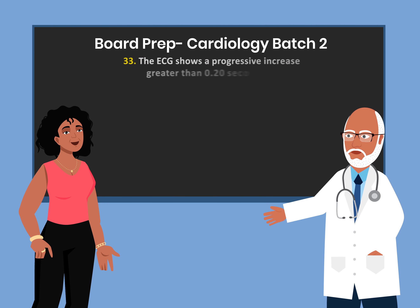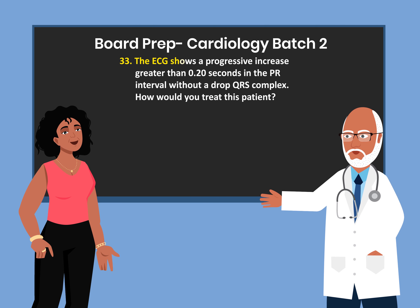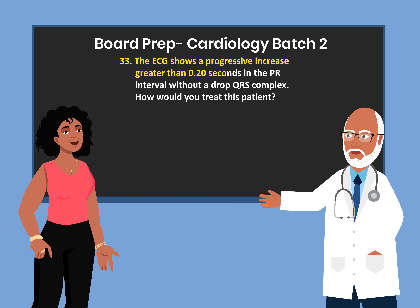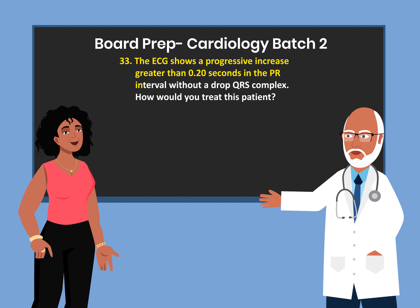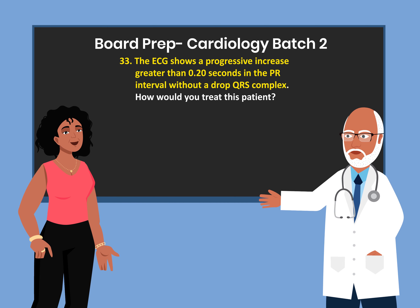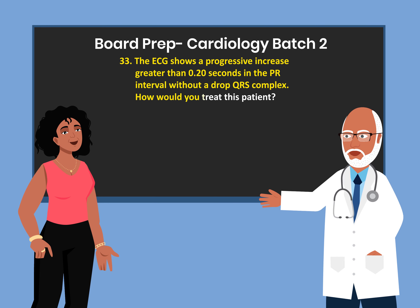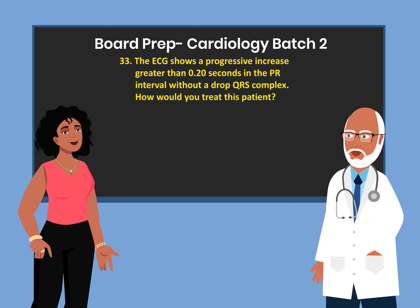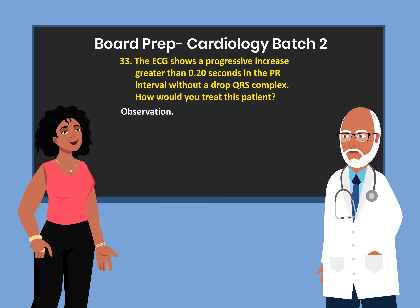The ECG shows a progressive increase greater than 0.20 seconds in the PR interval without a dropped QRS complex. How would you treat this patient? Observation.